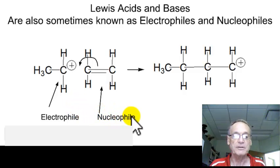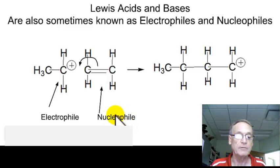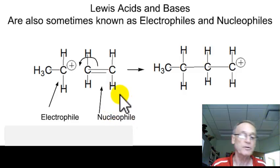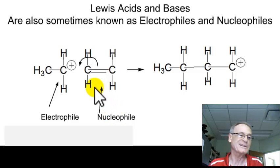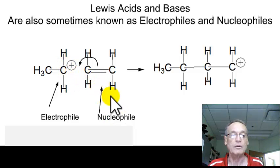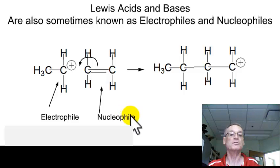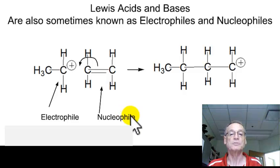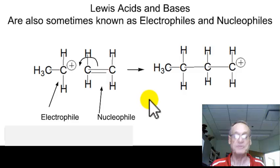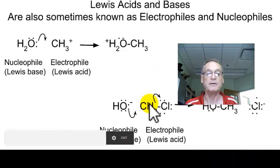A nucleophile, on the other hand, is a lover of nuclei — something that has a pair of electrons that it wants to donate to another nucleus. So it wants to find another nucleus, being something positive like carbon or electron-deficient like boron. Basically, two different terminologies for the same thing: a Lewis acid is an electrophile, a Lewis base is a nucleophile.